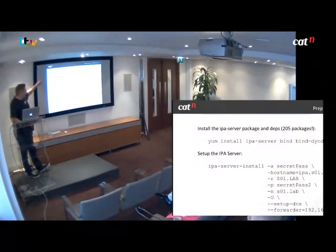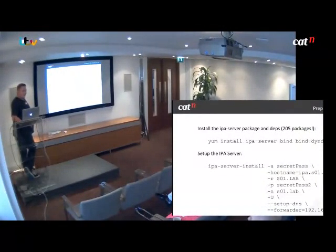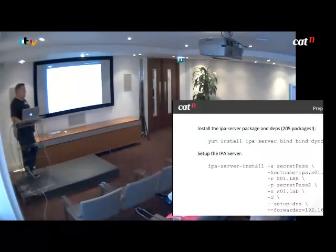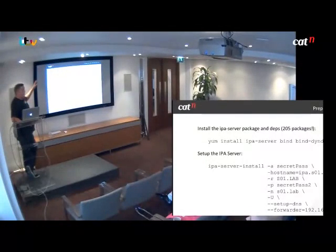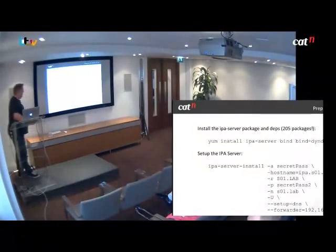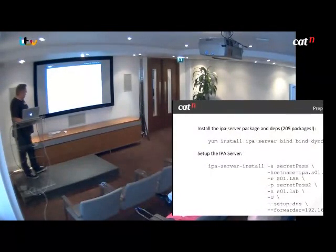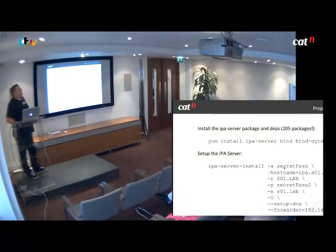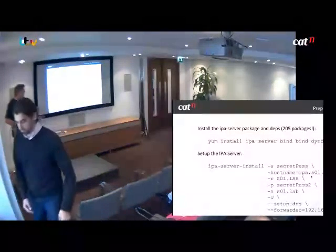So you run that first command and that currently pulls in 205 packages. Fortunately they all come from the standard CentOS repos — you don't need to enable any special repos at all. Once you've got your packages in, you need to actually set up your FreeIPA server. You're going to give it some passwords: one for an admin user which it's going to set up on the machine, and another one for client registration.